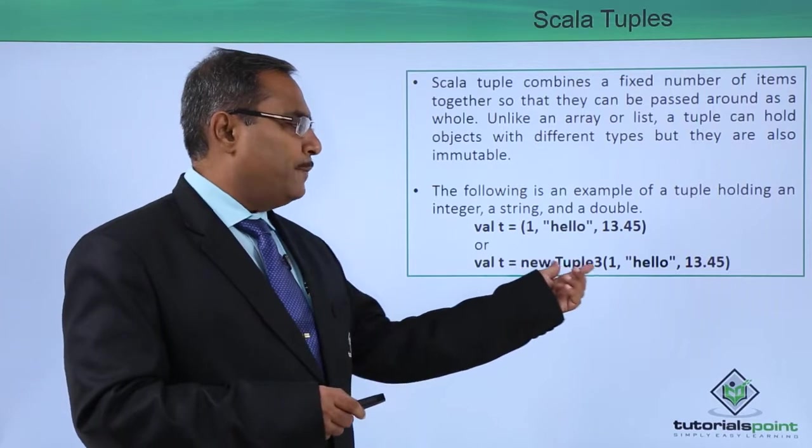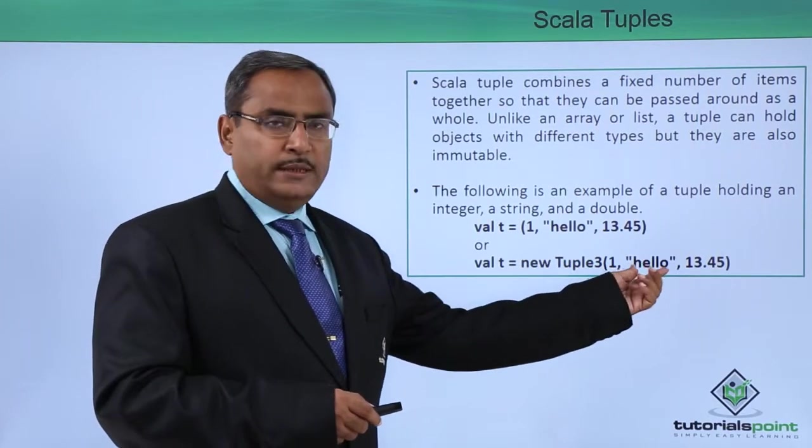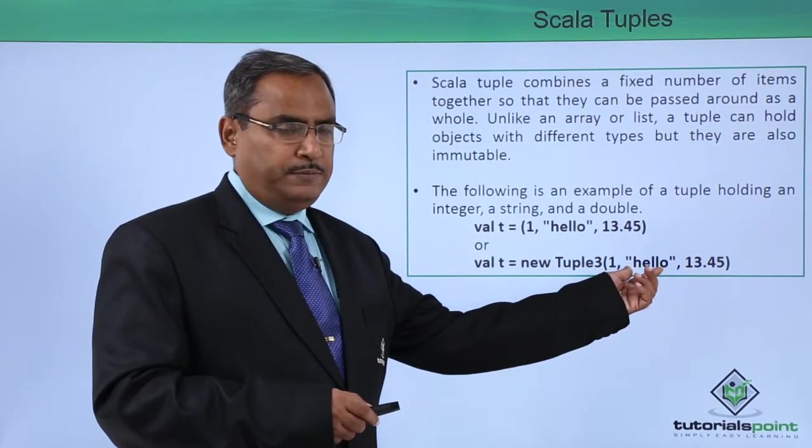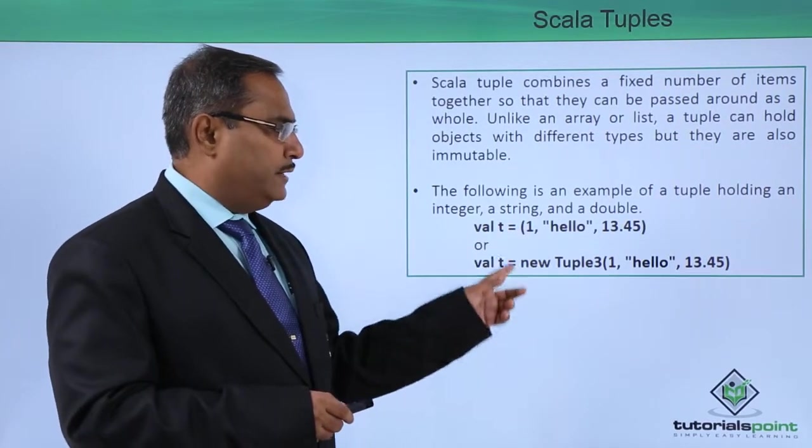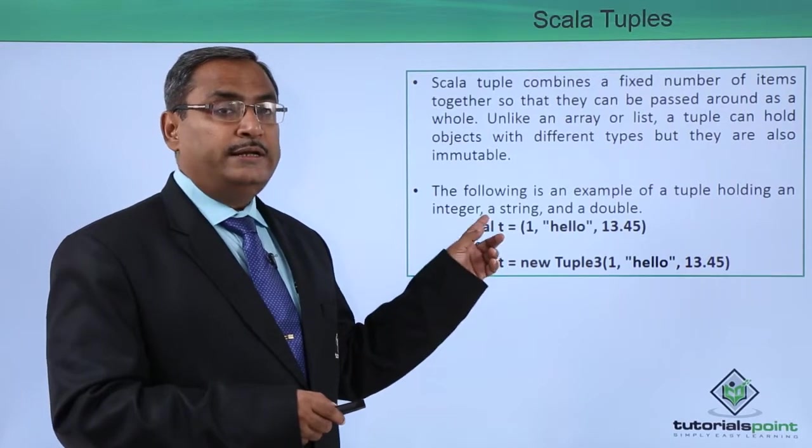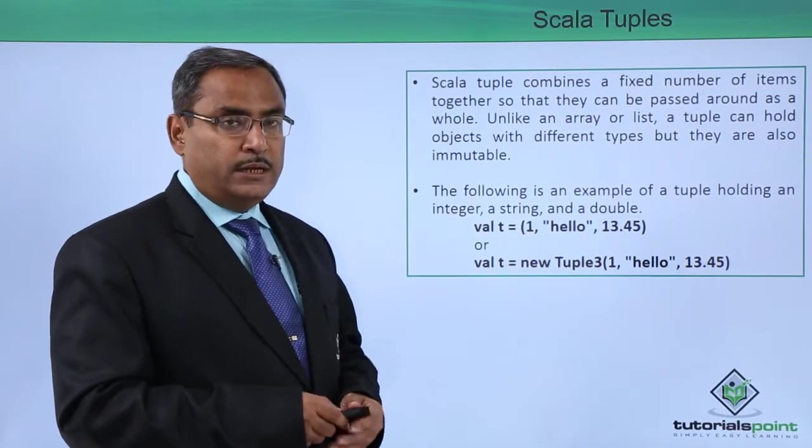We can also define it this way: val t = new Tuple3(1, "hello", 13.45). 1 is an integer type, "hello" is a string, and the third is a double type. So we can define this variable t in either of these ways.